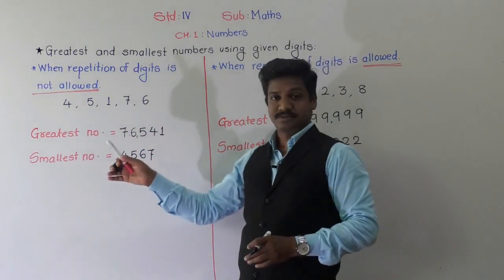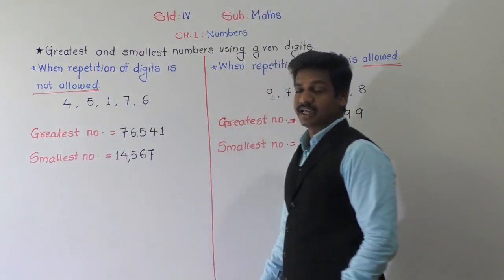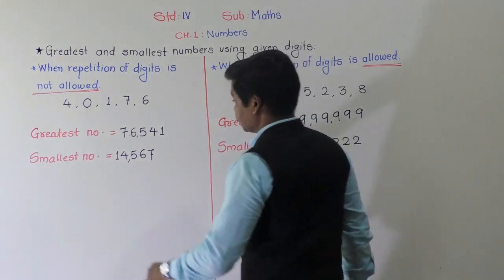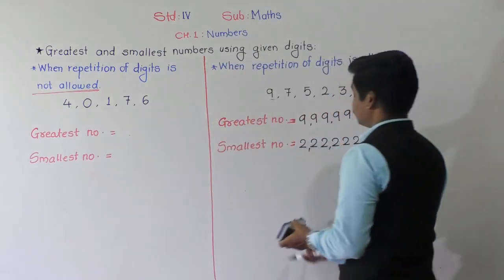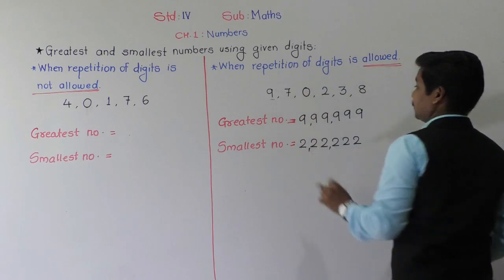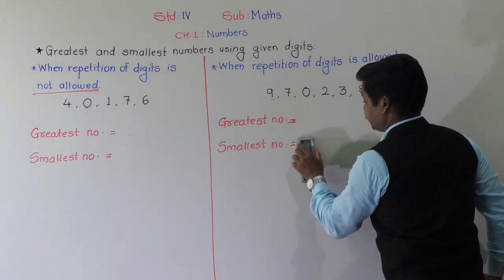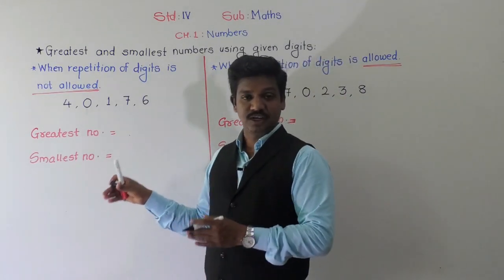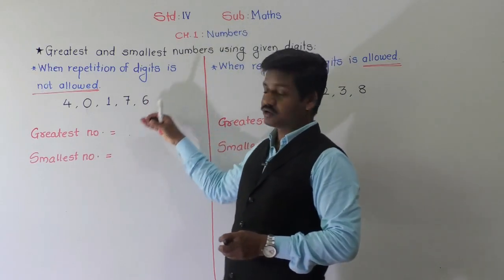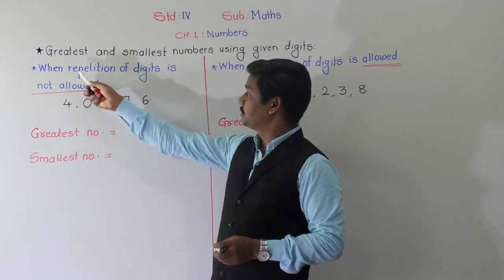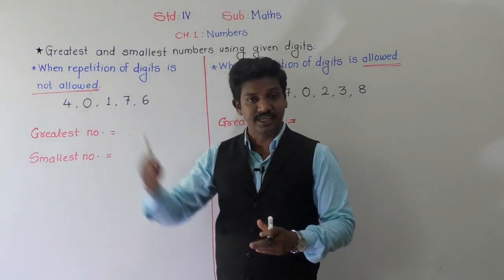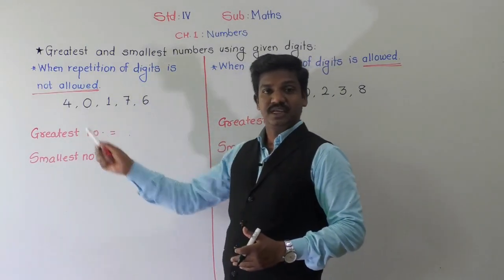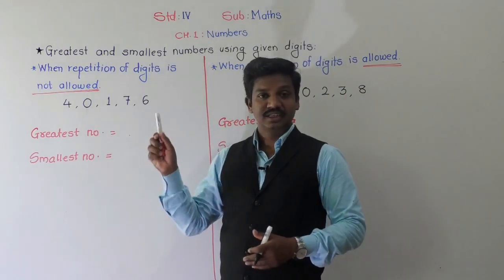There is a special case: when one of the given digits is 0. Suppose instead of 5 we take 0 as one of the digits. When repetition is not allowed and we arrange in ascending order to form the smallest number, the smallest digit is 0. But we cannot write 0 at the first position because then it would not be a five-digit number — it would only be a four-digit number. So there is a little change we need to make.